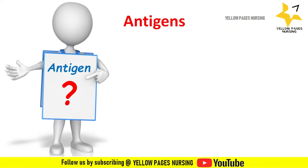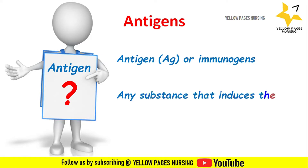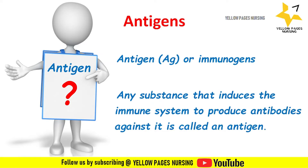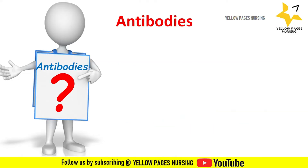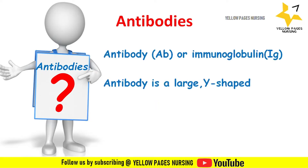An antigen, also known as an immunogen, is any substance that induces the immune system to produce antibodies against it. Next comes antibodies. An antibody is also known as an immunoglobulin, abbreviated as Ig.